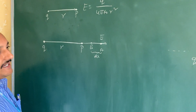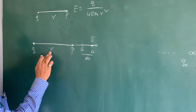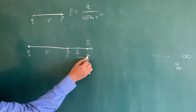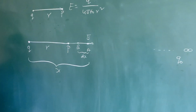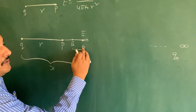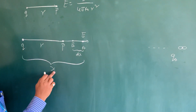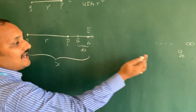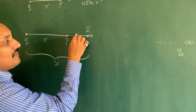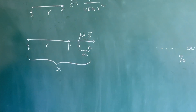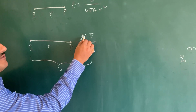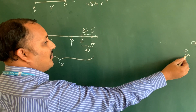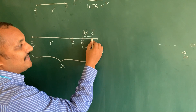Let us assume this small displacement is dx. Point P is at distance r. The distance between point a and the charge q is x. We brought q naught up to point a, which is at distance x. Now again we are taking a small distance from a to b, that is dx. To move the charge q naught from a to b through distance dx, how much work are we doing? That is dw.